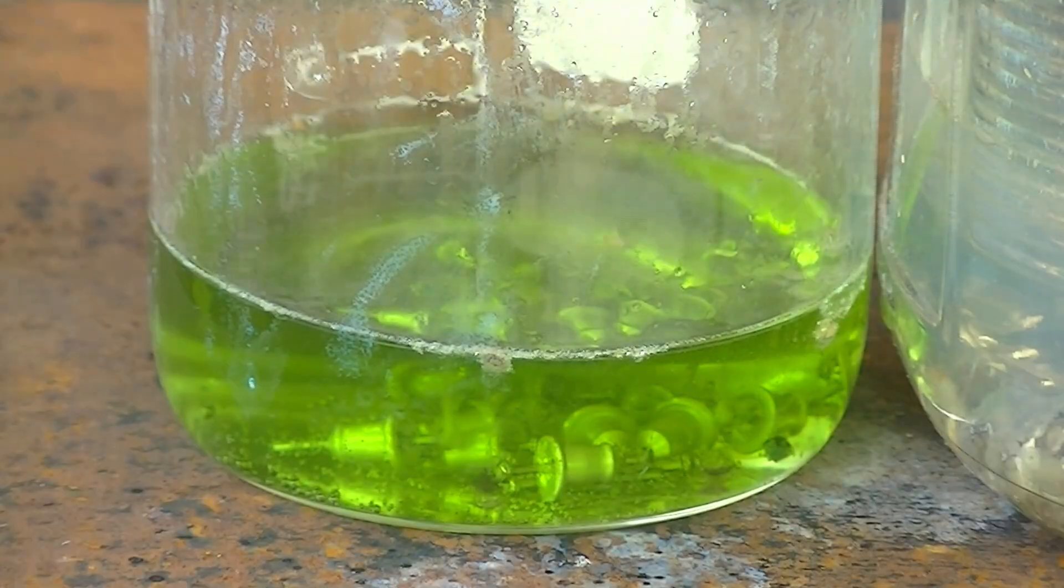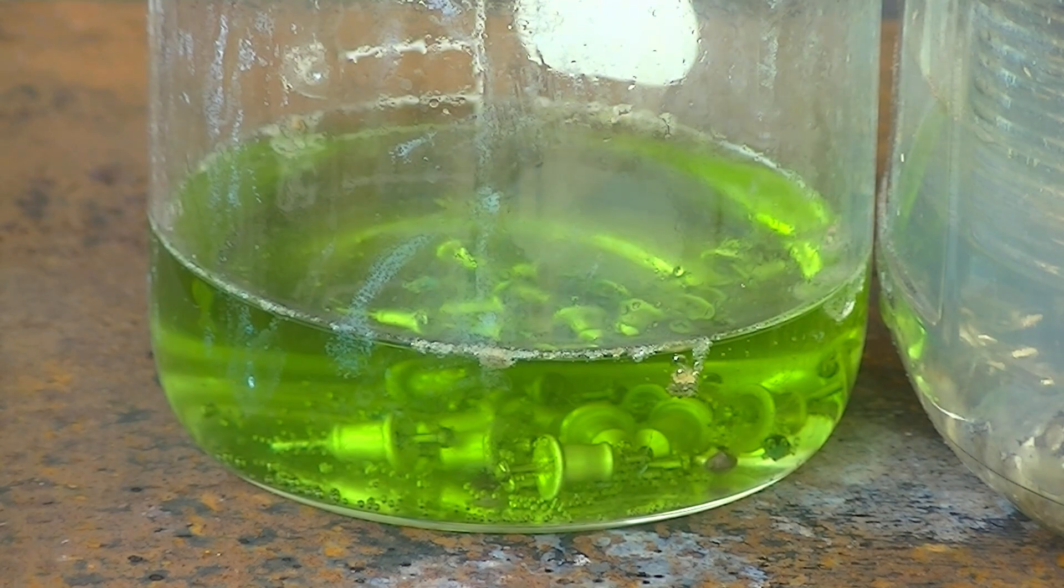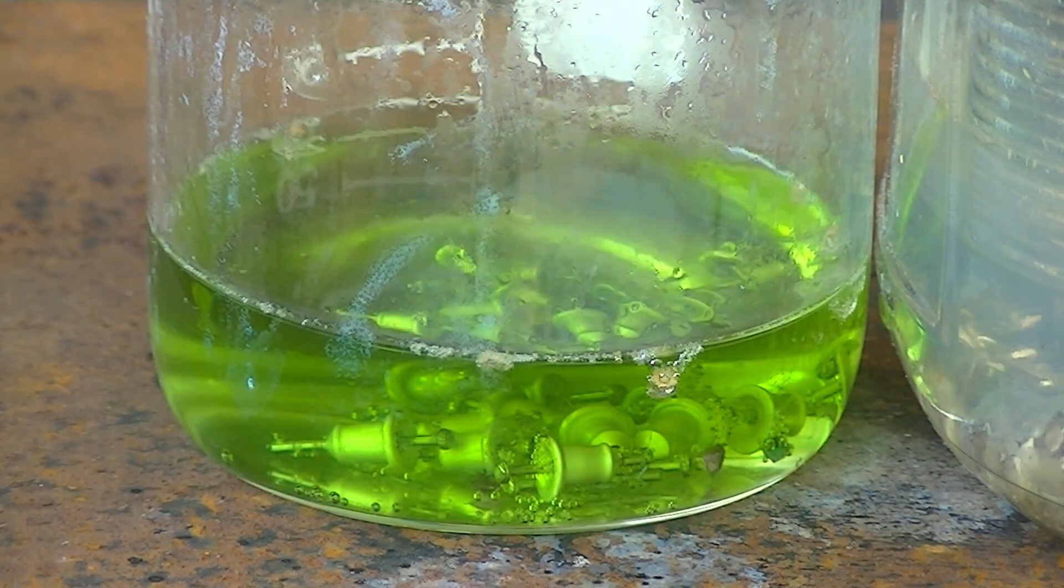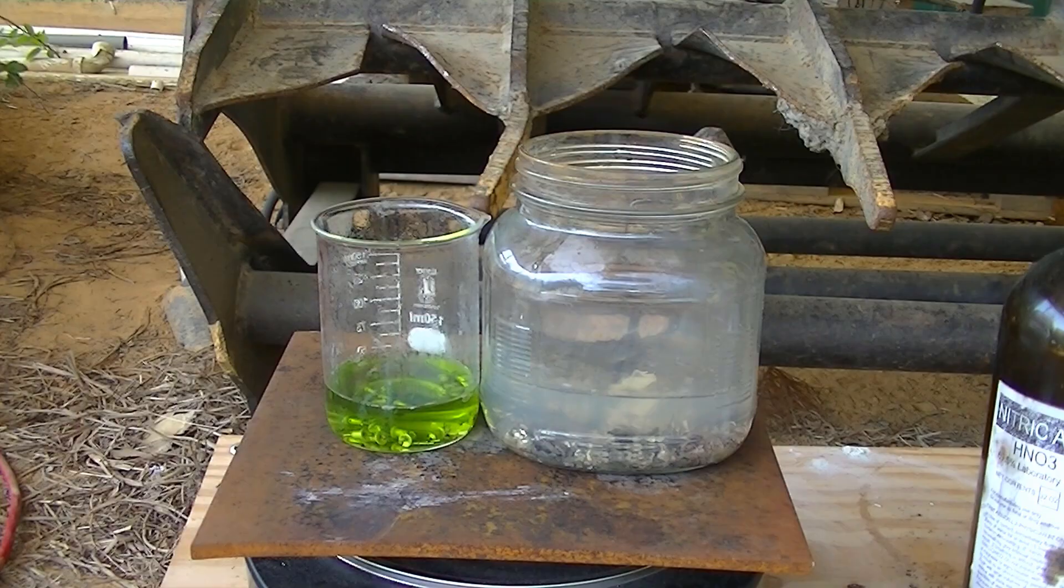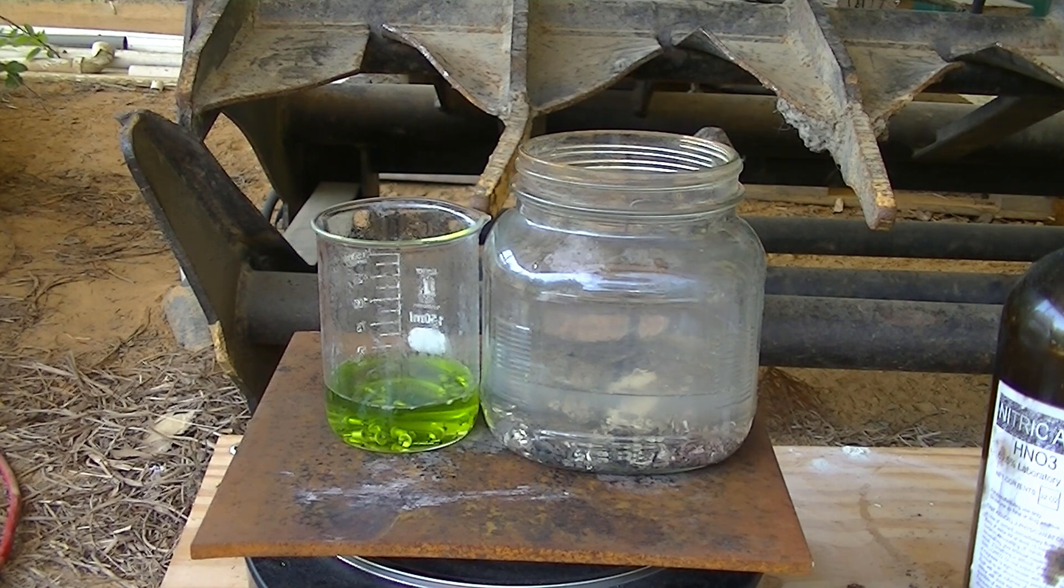I separated out these earrings because of the diamonds and also because they were attracted to a magnet, so I knew that they were not made out of silver. From the green color that this acid turns though, I can conclude that these were actually made out of nickel and not the steel I originally thought.